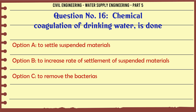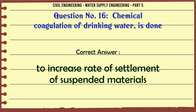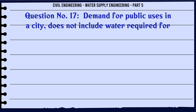Chemical coagulation of drinking water is done: A. To settle suspended materials, B. To increase the rate of settlement of suspended materials, C. To remove bacteria, D. None of these. The correct answer is: To increase the rate of settlement of suspended materials.